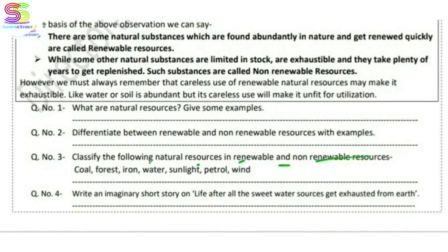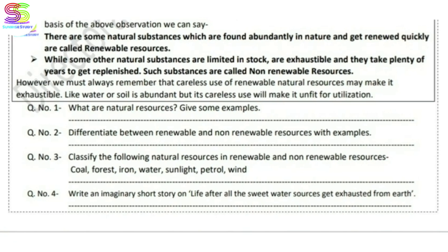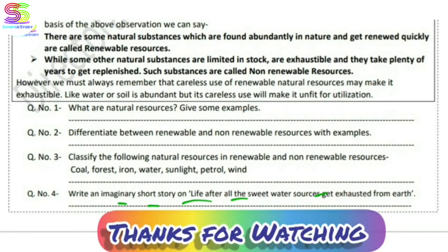Classify the following natural resources as renewable or non-renewable. Forest takes a long time to grow, so it can be both — but iron (iron ore) is non-renewable. Water is renewable, petrol is non-renewable, and wind is renewable. Write accordingly. For the last question, try to write it yourself. If you liked this worksheet, please subscribe to the channel. Thank you for watching.